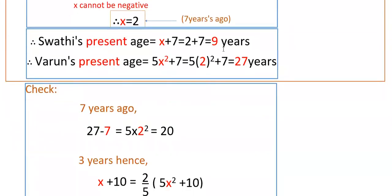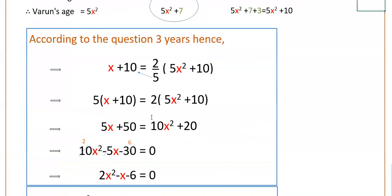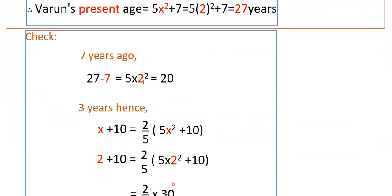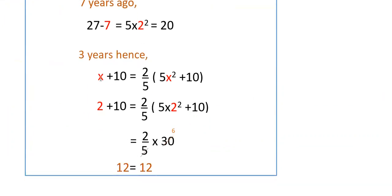You can verify these answers. 7 years ago, Varun's age was 27 minus 7, that is 20. And 5X squared equals 5 into 2 squared equals 20. So this is correct. For the 3 years hence condition, you can also apply the values and verify — it checks out correctly.